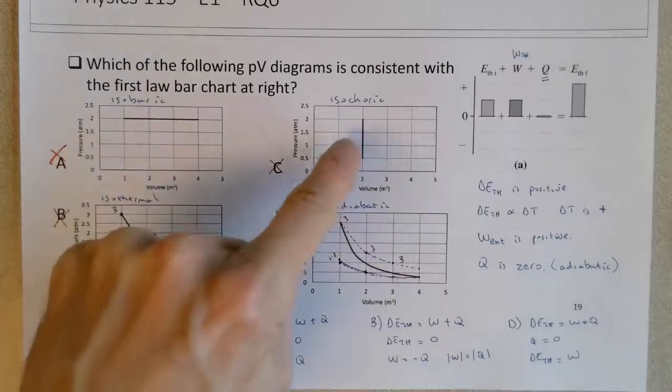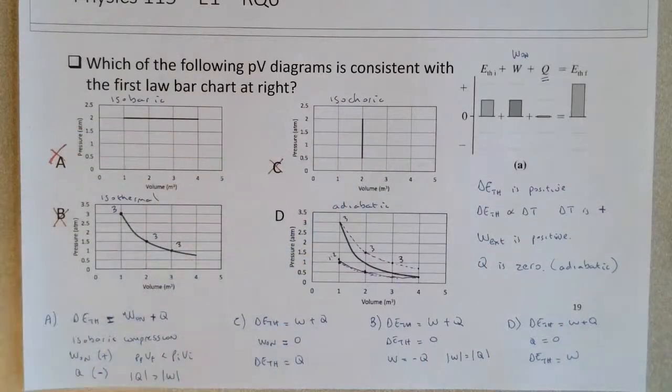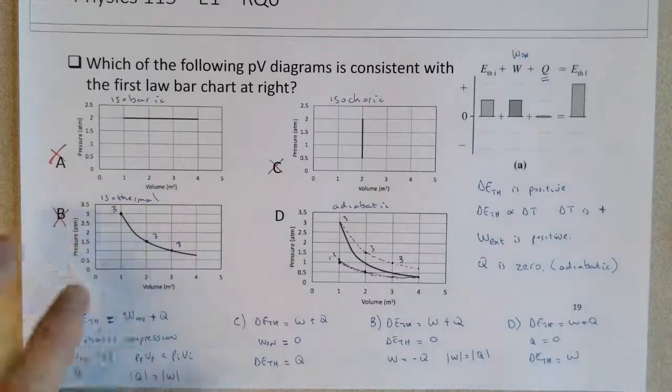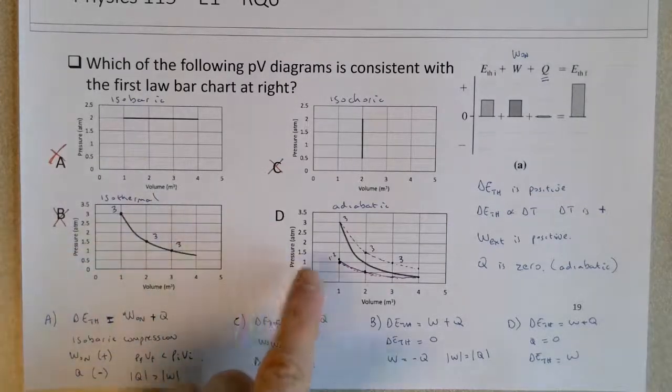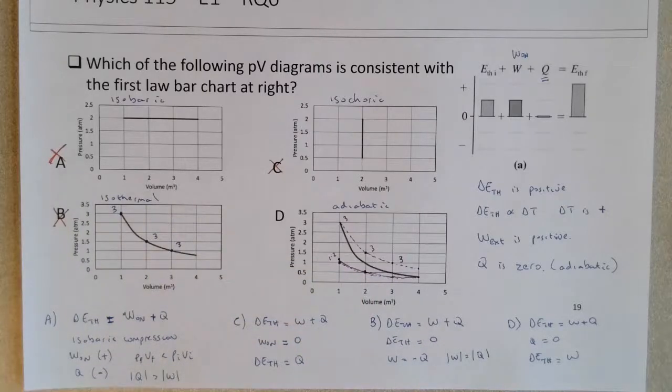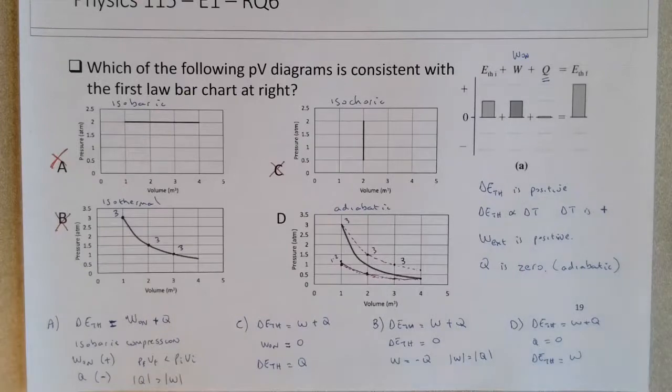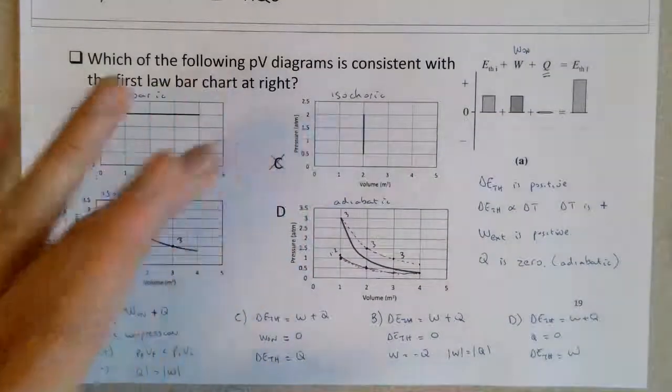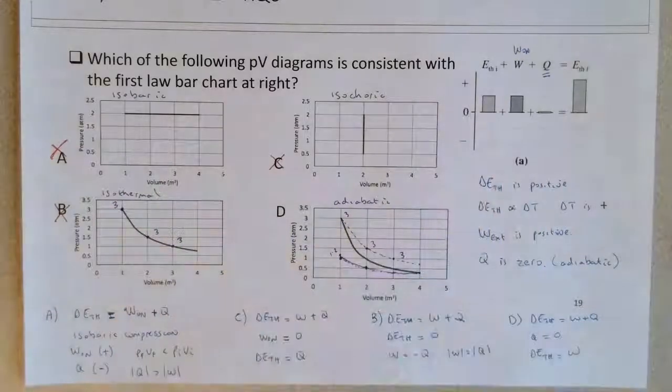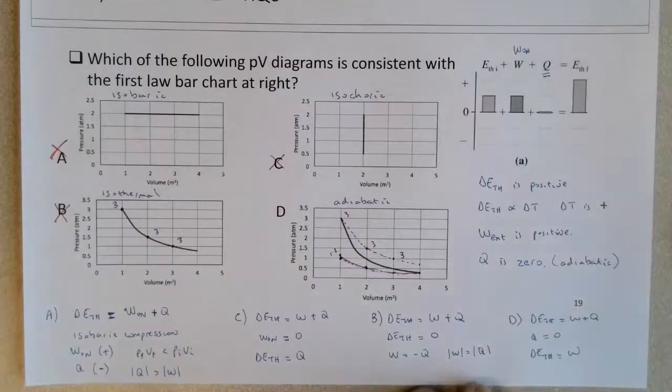The key to the question is knowing that there's no Q in the first law bar chart. So that means that the process has to be adiabatic. During an isobaric, isochoric, and an isothermal process, the Q is definitely not zero. So in all those examples, Q is non-zero. And for the isotherm, there's many reasons you can rule out A, C, and B even if you don't know exactly what an adiabatic looks like.